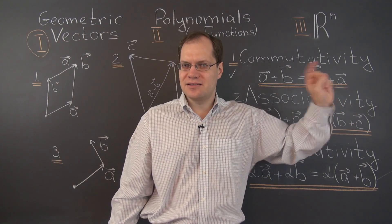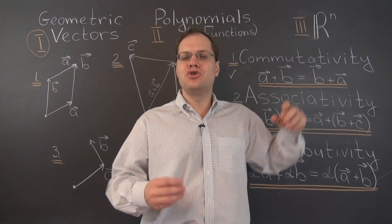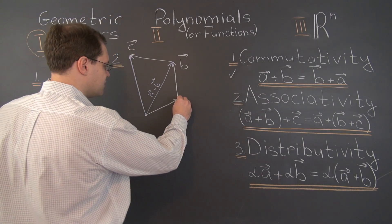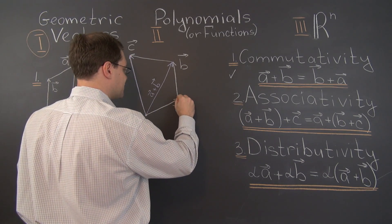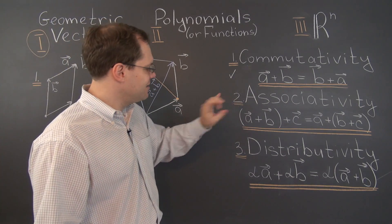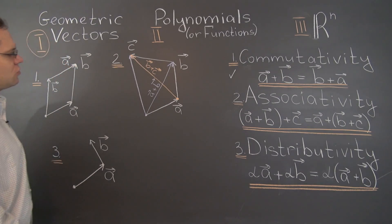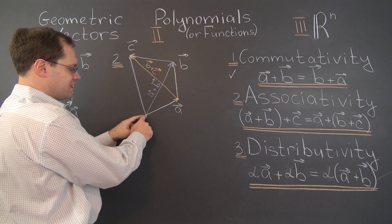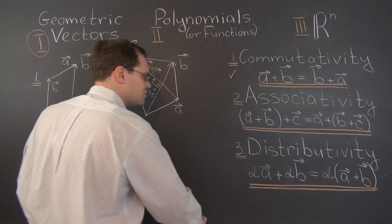Now let's interpret the right-hand side. We must first combine vectors B and C as a single trip — a single vector that starts where trip B starts and ends at the tip of vector C. So this vector right here is B plus C. Now we add A to B plus C, starting once again at the origin with A, then this orange vector B plus C, and we end up at the very same point. Associativity holds.